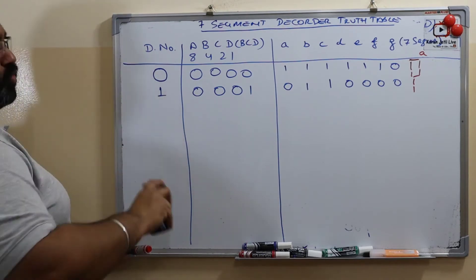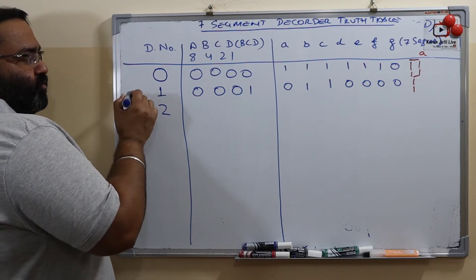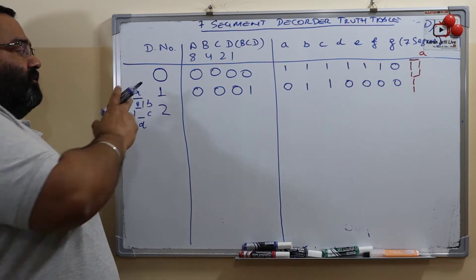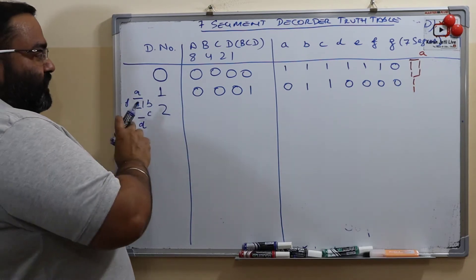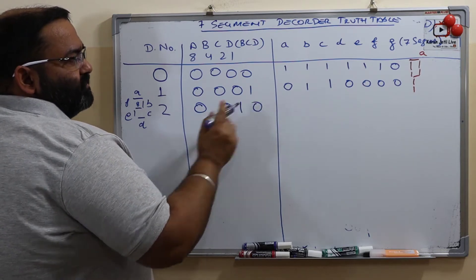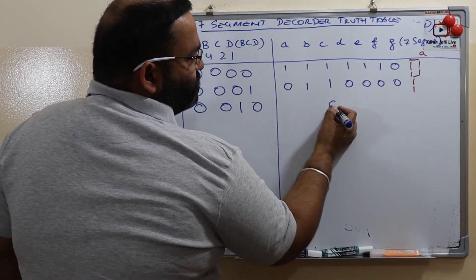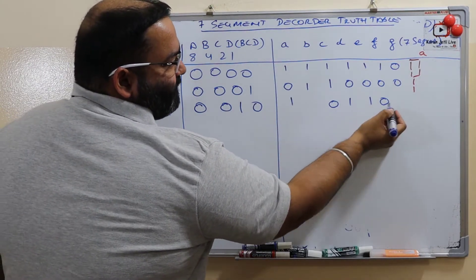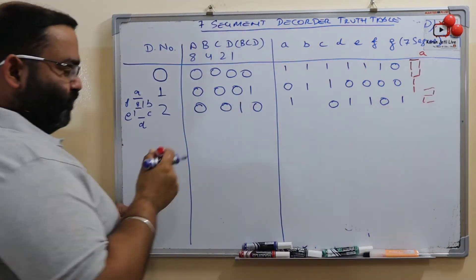Now we want two. How do we display two? Two is displayed by turning on segments A, B, D, E, and G. So what segments are off? C and F are off. Rest everything is on. And what we get here is 2. The BCD code for two is 0010.